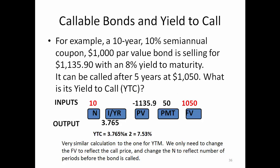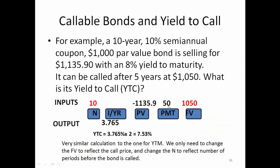We can calculate yield to call the same way as yield to maturity using a financial calculator. The coupon payment is $50, N is 10 semi-annual periods because that's five years of 10 coupon payments. The FV here is not the $1,000 par value but the call price of $1,050. The price is $1,135.90 as a negative number. Computing for I/Y gives 3.765.